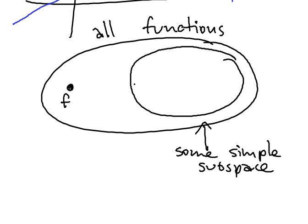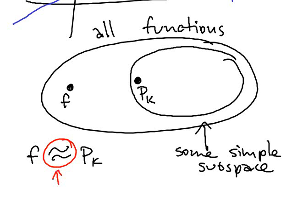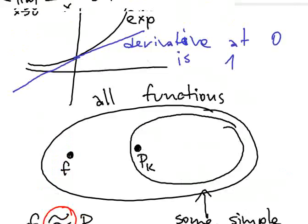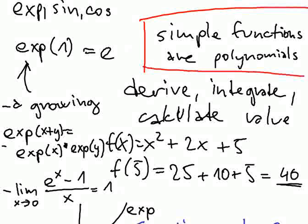Let's say I have this function f. Instead of it, let's use some function p_k such that f is approximately p_k in some sense. It depends on your specific requirements from the approximation. There are two things: what 'good approximation' means in this setting, and what the simple subspaces are. One of the most simple subspaces we already discussed are subspaces of polynomials.